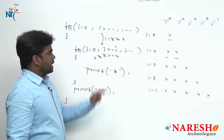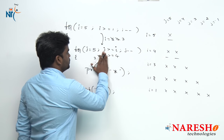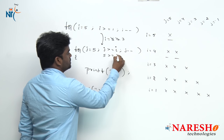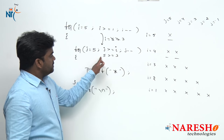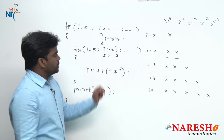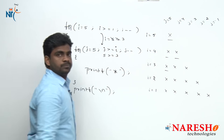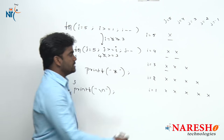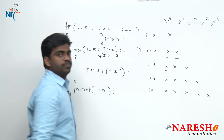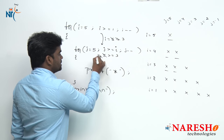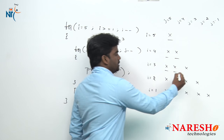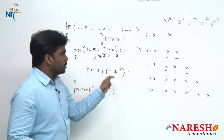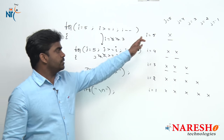Next i value decreases to 3. Come inside, again j value starts with 5. 5 is greater than or equals to 3 — 1 star. Next j value decreases, 4 is greater than or equals to 3 — second star. Next it decreases, 3 is greater than or equals to 3 — third star it will print. In the same way all the for loops execute and it will print this pattern.